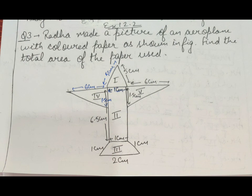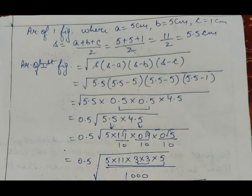We are starting with figure number one. Figure number one is of the shape of a triangle — it is an isosceles triangle where two equal sides are of 5 centimeters and another side is of 1 centimeter. By using Heron's formula we can find the area of the first figure.